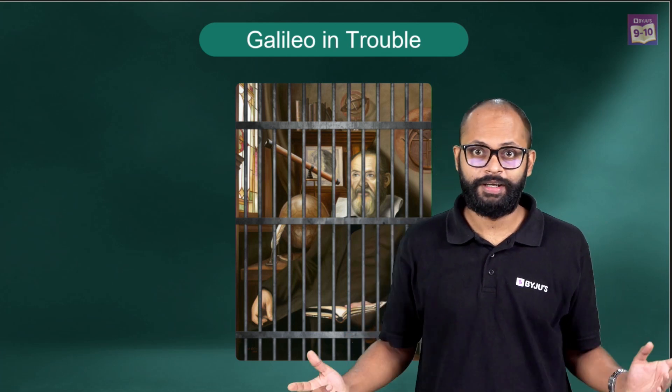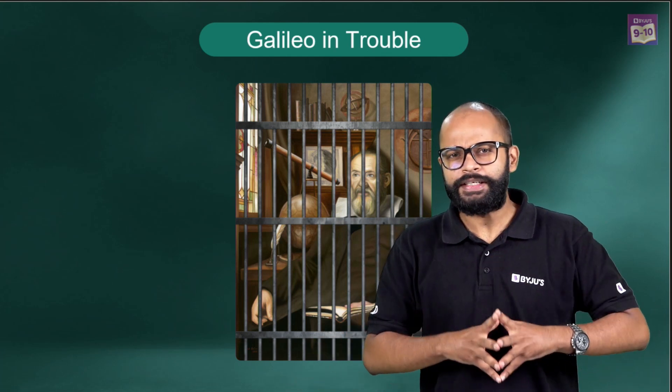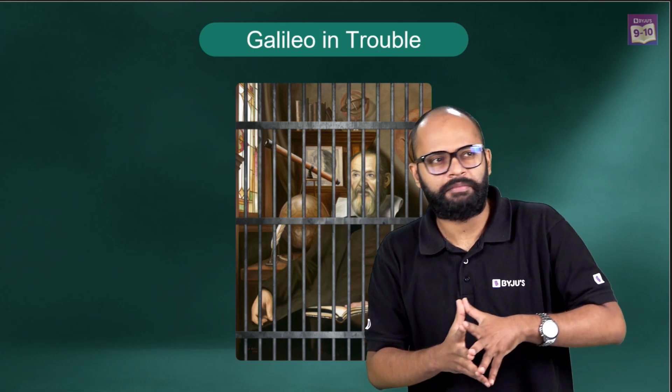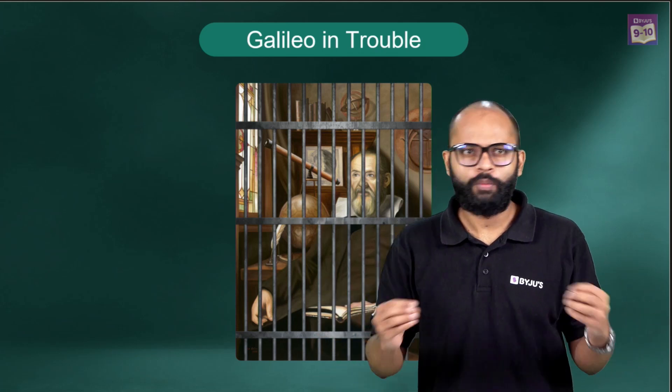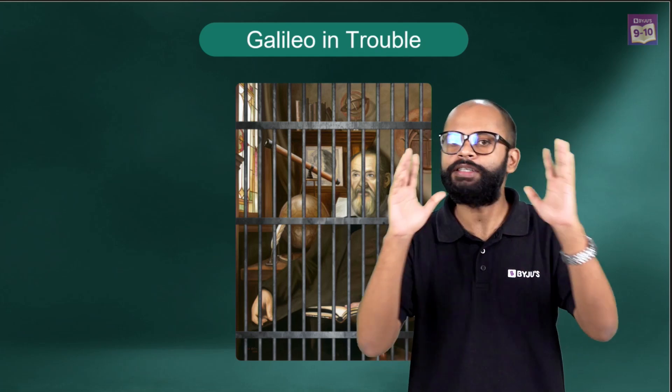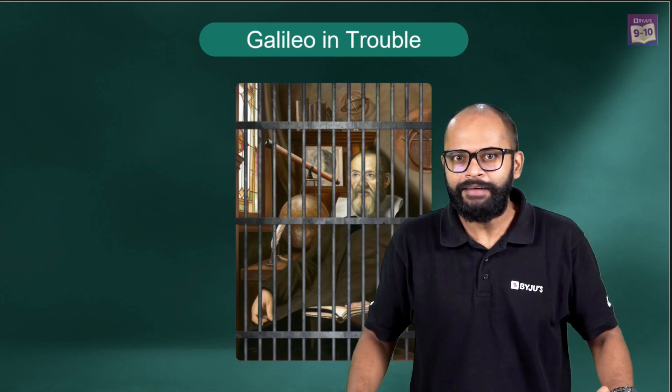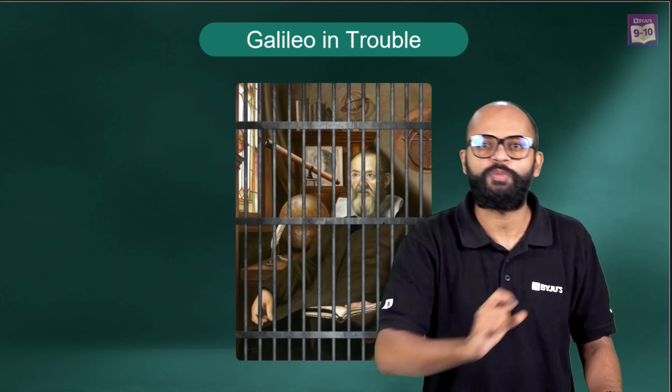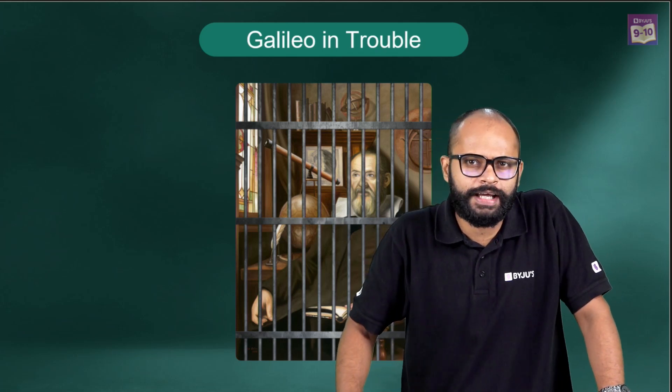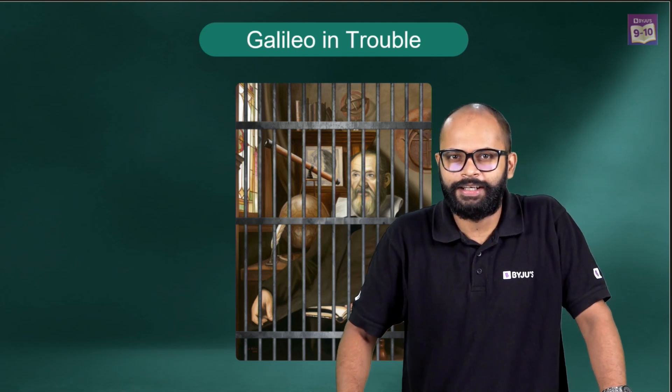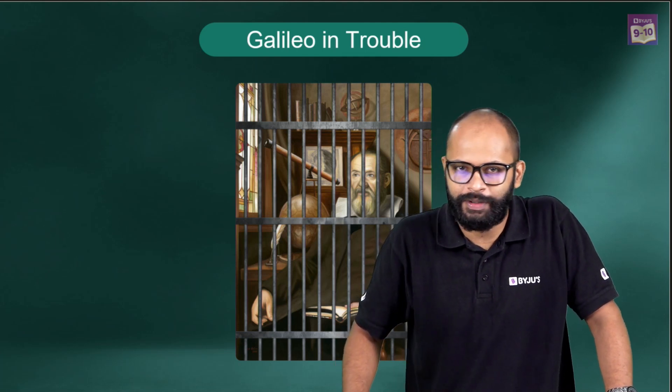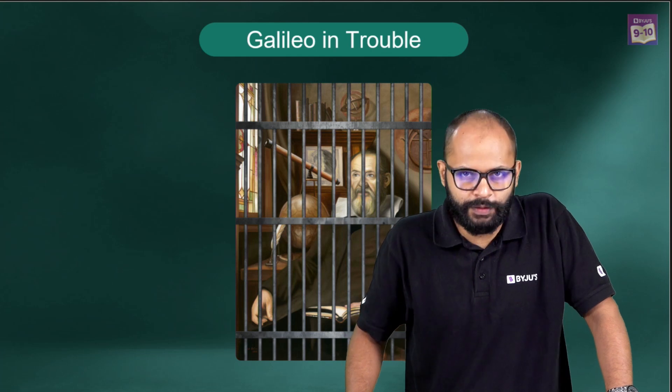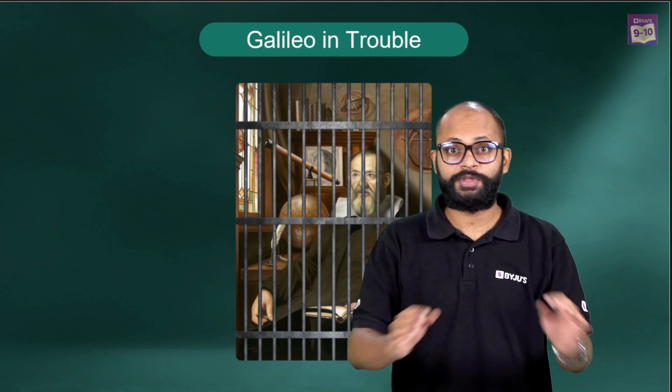The question is, how was he able to say that? What did he have that others didn't? He had an instrument called spy glasses, which today we call telescopes. He worked on telescopes and built a telescope.